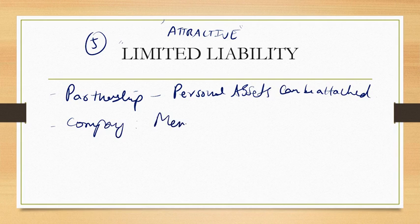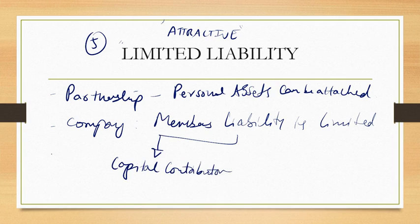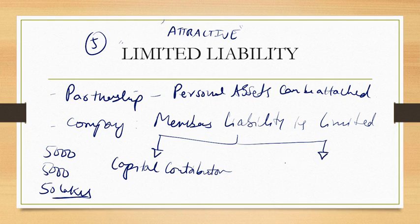The liability of members is limited to their capital contribution. For example, if you have contributed 5,000 rupees, your liability is maximum only 5,000 rupees even if the company has a 50 lakh loss. That is not your liability because of the concept of limited liability. Also, the liability is maximum limited to what you have subscribed — what shares you have subscribed is your maximum liability.